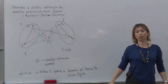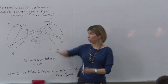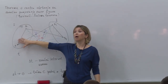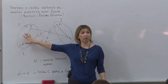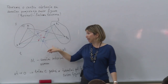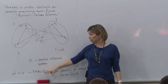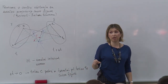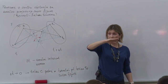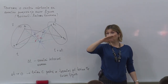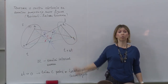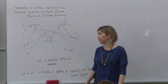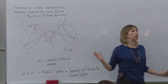Kad pustimo da interval vremena teži nuli, posmatramo dva beskonačno bliska položaja ravne figure — naša tačka C nije ništa drugo nego trenutni pol brzina i imamo trenutnu rotaciju ravne figure oko datog trenutnog pola brzina.